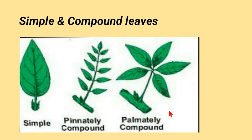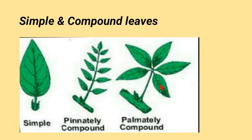This is a palmately compound leaf — it looks like a palm of a hand. The petiole is the stalk of the leaf, and at the distal end of the petiole smaller leaflets emerge at a single point, making a palm shape. That's why it is called a palmately compound leaf.